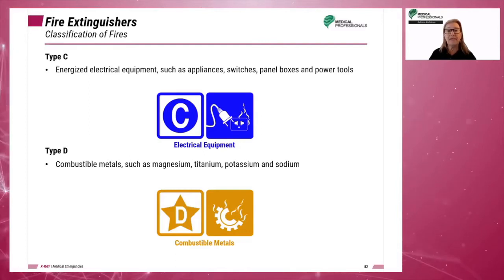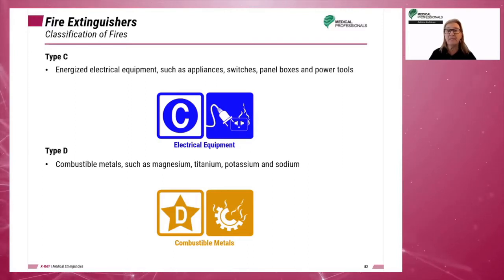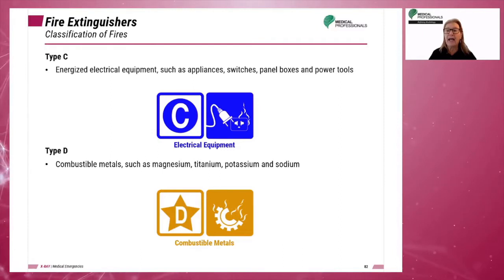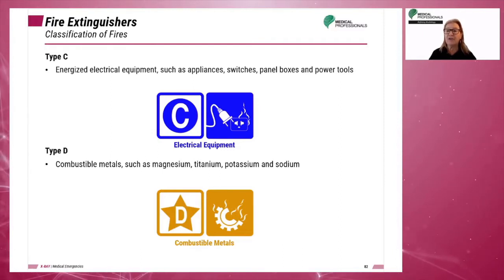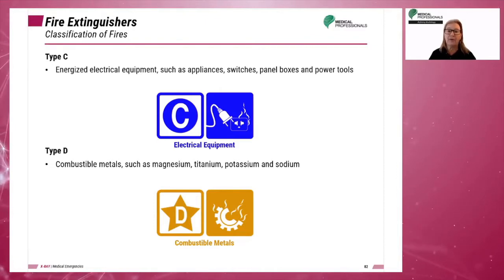A Type D fire involves combustible metals such as magnesium, titanium, potassium, and sodium. These metals burn at high temperatures and create their own oxygen to support combustion. They may react violently with water or other chemicals.